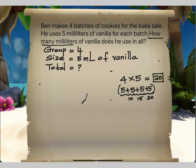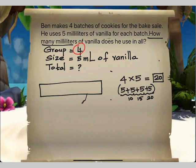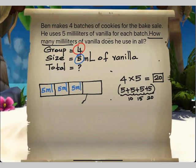Let me draw a tape diagram. Since we know the number of groups is four, there should be four boxes: first box, second box, third box, and fourth box. So there are four groups in the tape diagram. We know the size of each group is five, so let me write five ml inside each group — each group represents each batch of cookies. So we know the total is 20 ml.